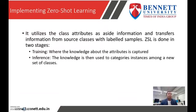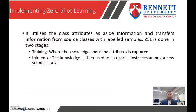How to implement zero-shot learning? Zero-shot learning utilizes class attributes as side information and transfers information from source to the unseen class. ZSL is done in two stages: training and inference. In the training stage, knowledge about the attributes is captured. In the inference phase, that knowledge is used to categorize instances among a new set of classes.